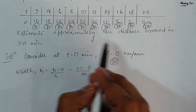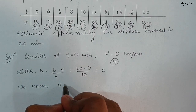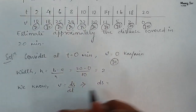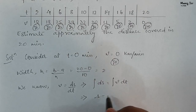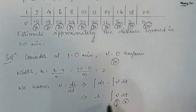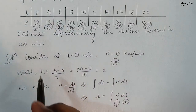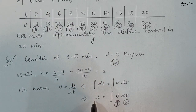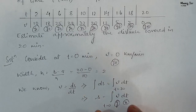In the problem, we need to find the approximate distance covered in 20 minutes. We know that velocity v equals ds upon dt. From here, ds equals v dt. Integrating both sides, s equals the integral of v dt, where v is y and t is x. The limit of t goes from 0 to 20, since we need the distance covered in 20 minutes.